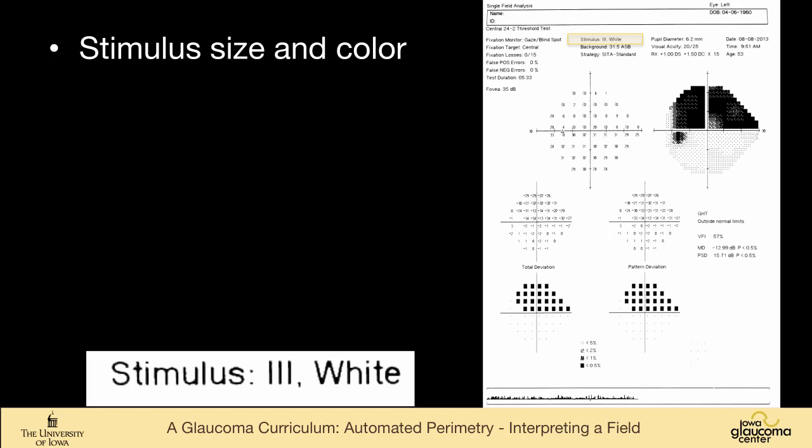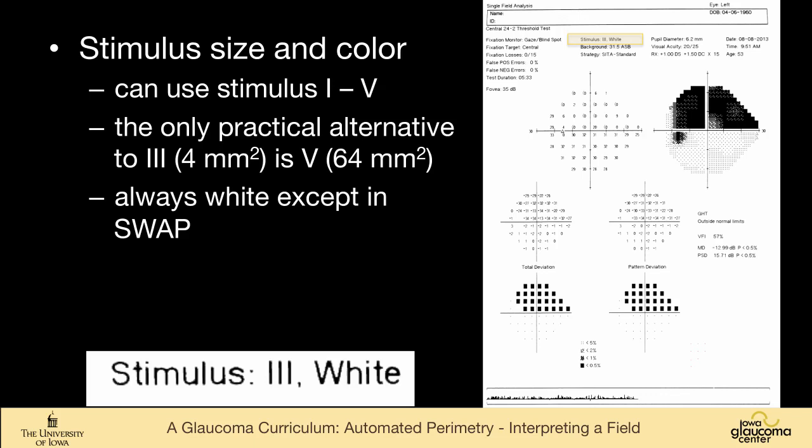Stimulus size and color, this is stimulus size 3, white. You can use anything from Goldmann size 1 to Goldmann size 5. Really the only practical alternative to the size 3, which is 4 square millimeters, is the size 5, which is 64 square millimeters. We always use white-on-white, achromatic field, unless you're doing short-wavelength automated perimetry, which is blue-on-yellow.